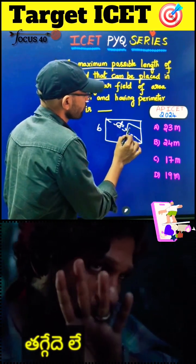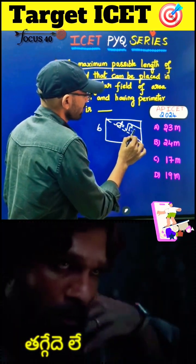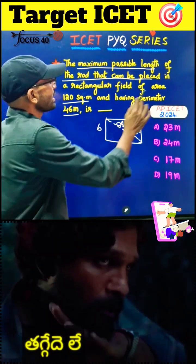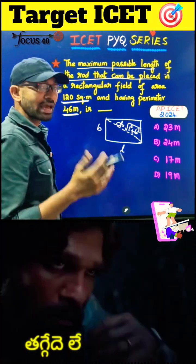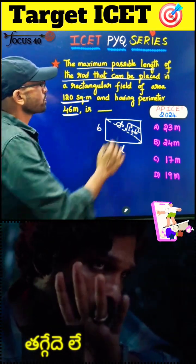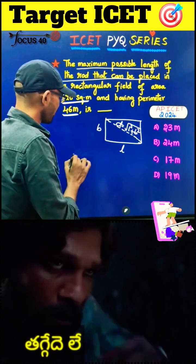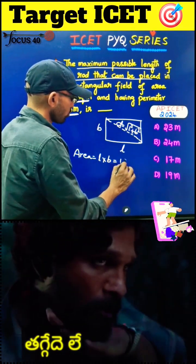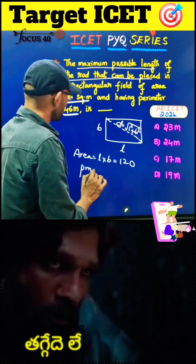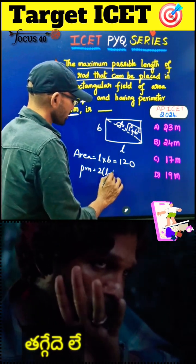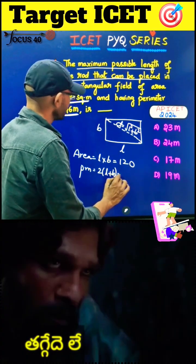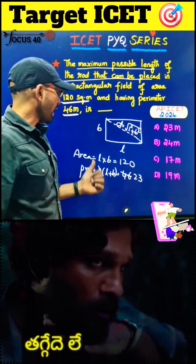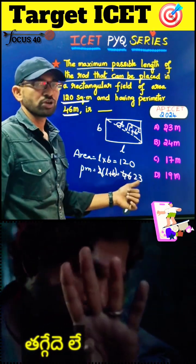The diagonal is equal to the square root of L squared plus B squared. From the given information, area equals length into breadth equals 120, and perimeter equals 2 into (L plus B) equals 46. Dividing by 2, L plus B equals 23. So we have two equations: L into B equals 120, and L plus B equals 23.